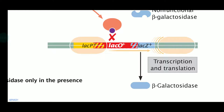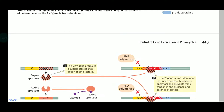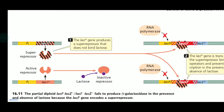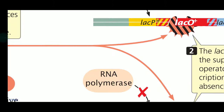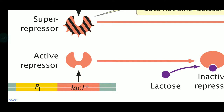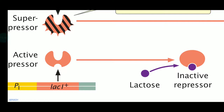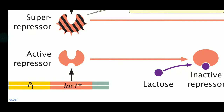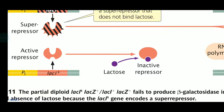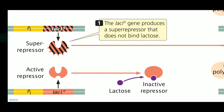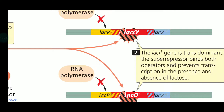The super repressor — here the basic difference is that it possesses an active site to bind with the operator DNA sequence, but it lacks the site for lactose binding. So even in very high concentrations of lactose or allolactose, it will not be able to bind with lactose molecules. Therefore, the operator will remain blocked by the super repressor and there will be no transcription, even in the presence of lactose.